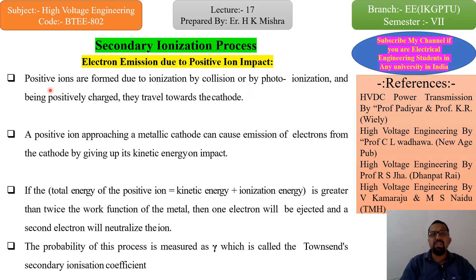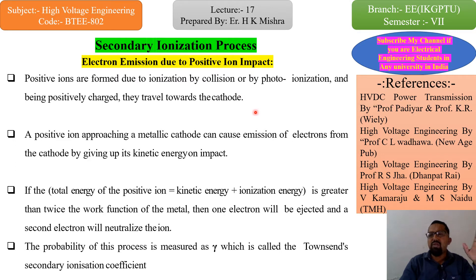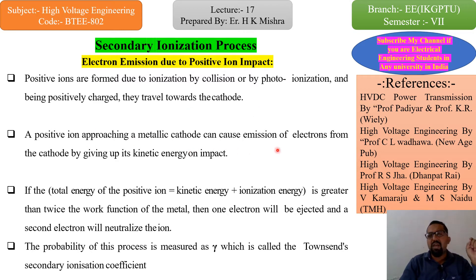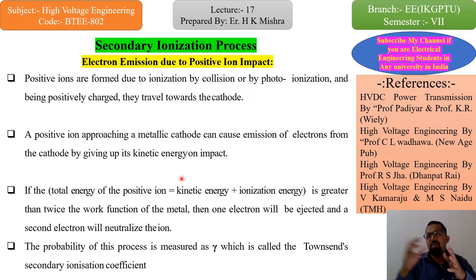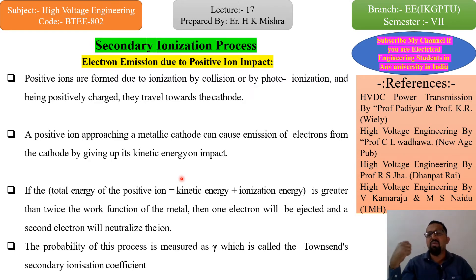In the first line it is written: positive ions are formed due to ionization by collision and by photo ionization, and being positively charged, they travel towards the cathode. So in primary ionization — by collision and by photo ionization — the electrons generated start to move from anode towards cathode. A positive ion approaching a metallic cathode can cause emission of electrons from the cathode by giving up its kinetic energy on impact.